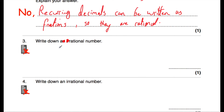Question number three says: write down a rational number. We could write down any whole number or integer. I'm going to write down three quarters. Three quarters is a rational number — it's expressed as a fraction, so it's rational.